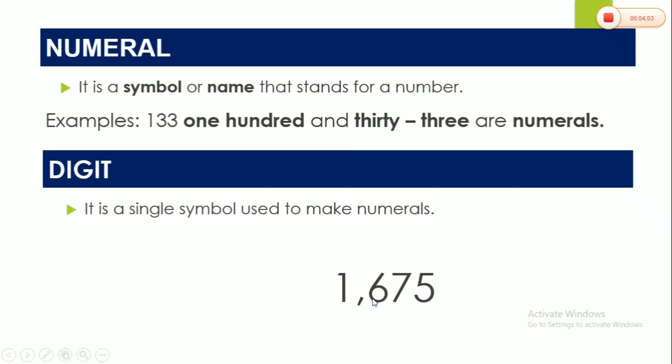So the example is 1, 6, 7, and 5, which means it reads as 1,675. Let me ask you, how many numerals are here? Okay, this one is only one numeral. Correct. But how many digits are there? The answer is there are 4 digits. So these 4 are what we call digits. Yes.